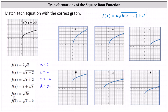For the fifth function, because the coefficient of x is two, we have b equals two. This indicates a horizontal compression by a factor of one divided by b, or in our case one-half. And finally, for the last function, we have d equals negative two, which indicates a shift down two units.